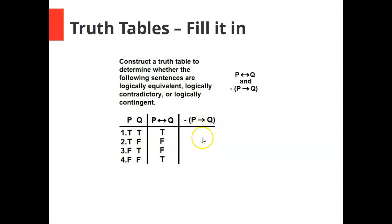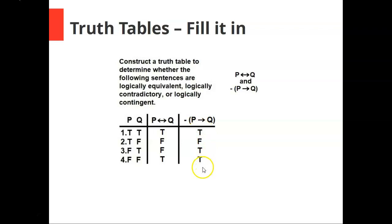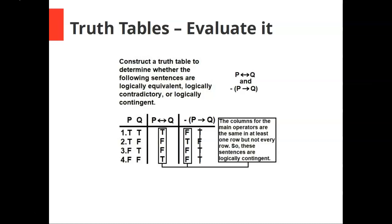For our second sentence, it is not the case that if p then q — we have to fill in the conditional before we can fill in the negation. The conditional is only false when you have a true antecedent and a false consequent, like in line two: true, false, true, true. The negation flips that column: false, true, false, false. Now evaluating, the columns for the main operators are the same in at least one row but not every row. So these sentences are logically contingent.